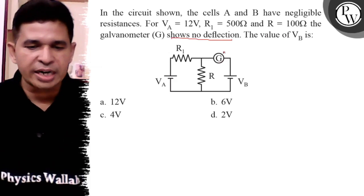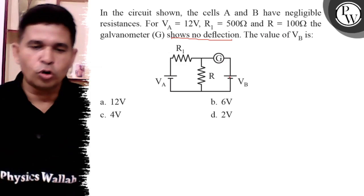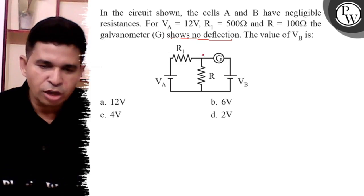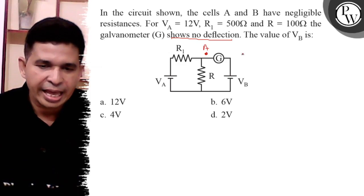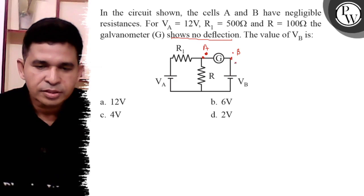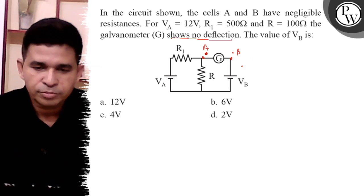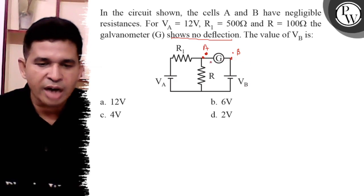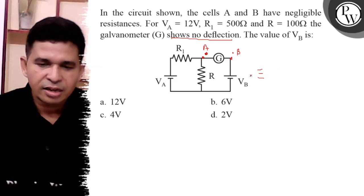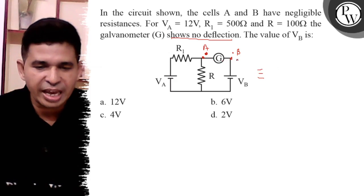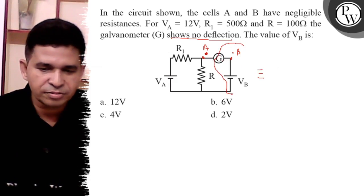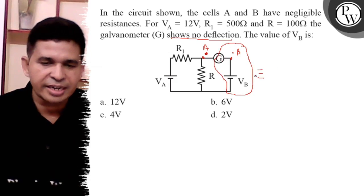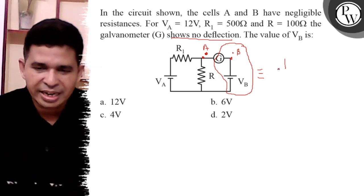Since the galvanometer shows no deflection, there is no current through it. This means the potential at point A and point B are equal. Because no current flows between A and B, that branch is not part of the circuit and can be removed.